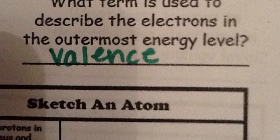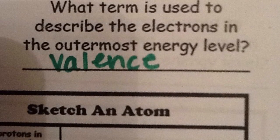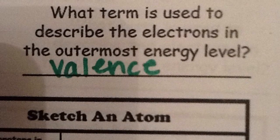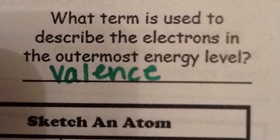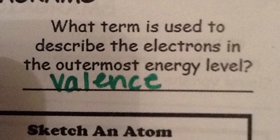The electrons in the outermost shell have a special name called valence electrons. These electrons are very important because they dictate a lot of the properties that the element will have.